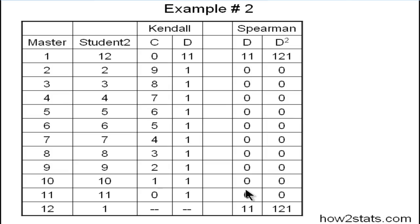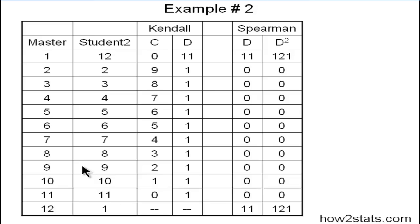Here's another example that I think is interesting. The master rated and rank ordered the art exhibits, and now we have a second student. These are rank ordered 1 to 12, but this student ranked the number 1 rank ordered art exhibit as a 12 — total opposite, from 1 to 12. And the 12th ranked art exhibit by the master was actually viewed as the best piece of art by the student. But everything else is exactly the same — they agreed perfectly on all other art exhibits. When you calculate the concordant pairs in this case...